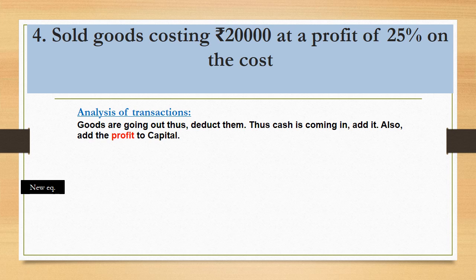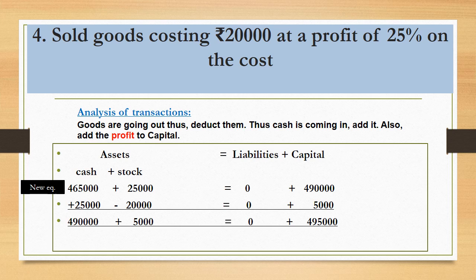Stock will be reduced by 20,000. With this transaction we are making a profit of 5,000, and that profit will increase capital. Cash mein 25,000 plus kar diya, stock ko 20,000 se reduce kar diya, aur 5,000 ka profit capital badhayega. In the new equation, cash is 4,90,000 and stock is 5,000 — total asset side is 4,95,000 — and capital is also 4,95,000. Both sides are equal, so the treatment was correct.